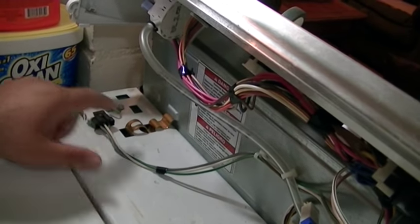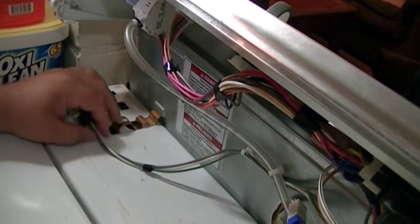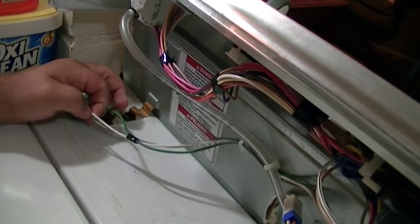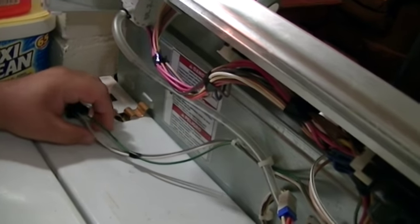The lid switch is either going to be located here or here. The wire you don't want to touch is the green wire. That leaves the grey and the white on this machine, so those are the ones that we're going to do.